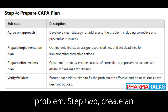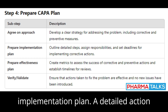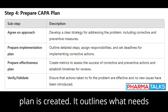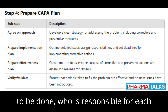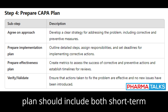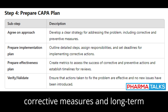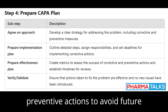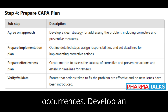Step 2: Create an Implementation Plan. A detailed action plan is created. It outlines what needs to be done, who is responsible for each task, and what the timelines are. The plan should include both short-term corrective measures and long-term preventive actions to avoid future occurrences.